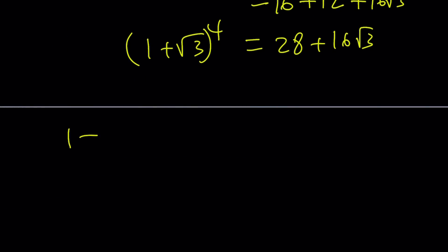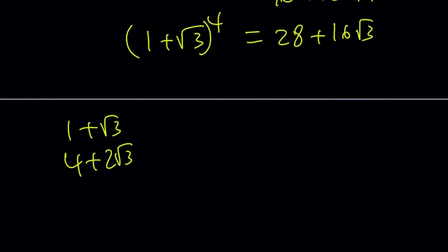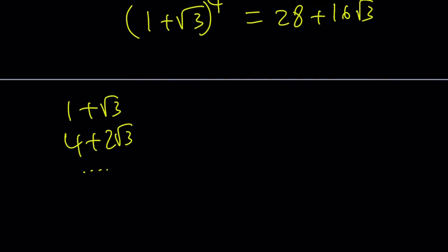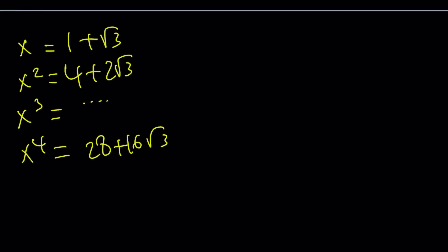So let's go ahead and write these down. First power is 1 plus root 3. The square is 4 plus 2 root 3. And then the 4th power is 28 plus 16 root 3. The number that I'm looking for is 10 plus 6 root 3. So where does this fall? Now if you look at this pattern you're probably going to realize that if it does work it should be the 3rd power.